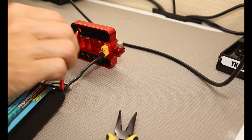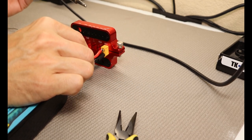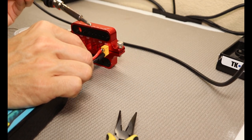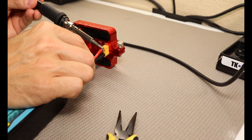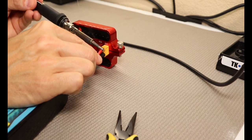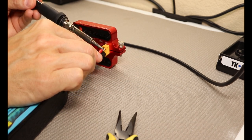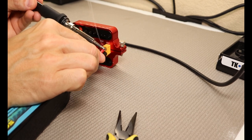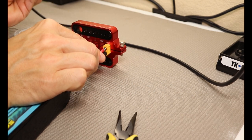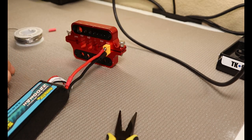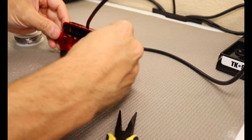And now that we're tinned, it should all flow together real easily. Just set her on top, dab a heat, hold it till it's solid, and that's it.